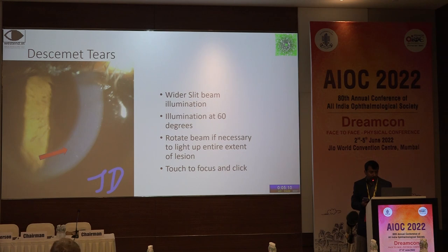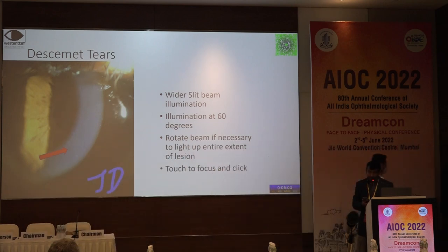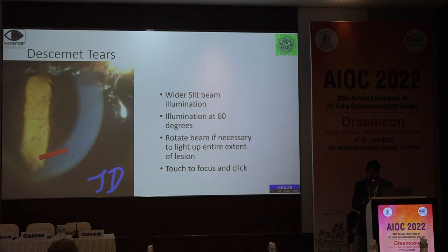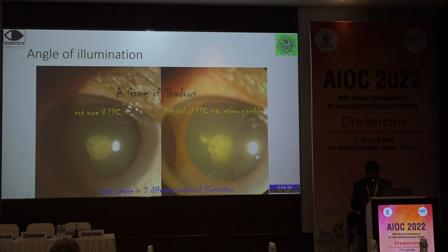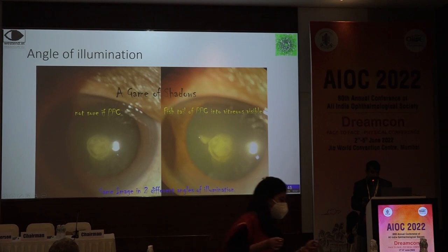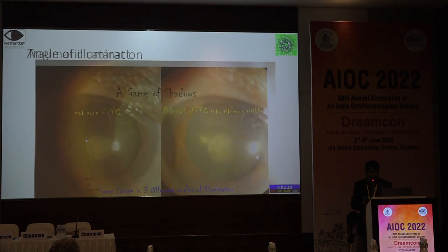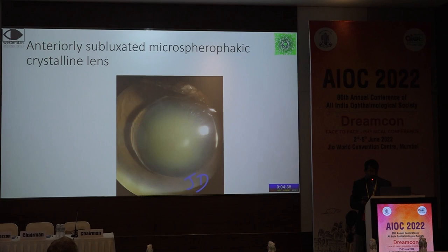For something on the cornea, you keep the illumination at an angle so that just behind what you have to photograph is darkness. If the background is brightly lit, you will get a lot of glare. So change the angle of illumination — the angle of illumination is very important because it is a game of shadows. Just change the angle and you can see things which you couldn't see before. So there is a fishtail of posterior polar cataract which could not be seen in one illumination. You can see a traumatic cataract and an anteriorly subluxated microsphero-phakia.